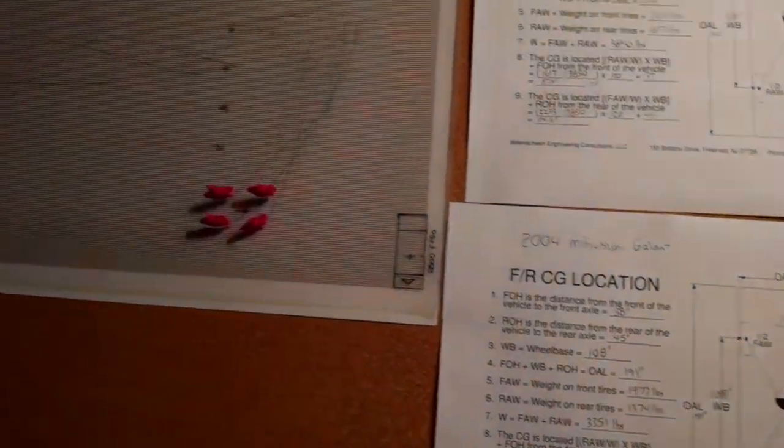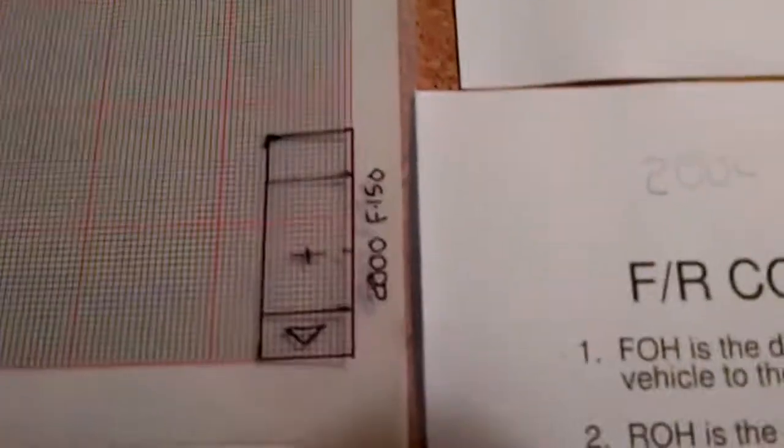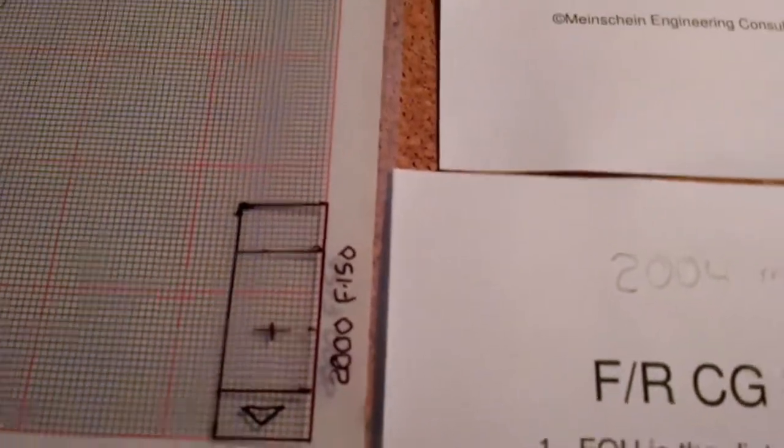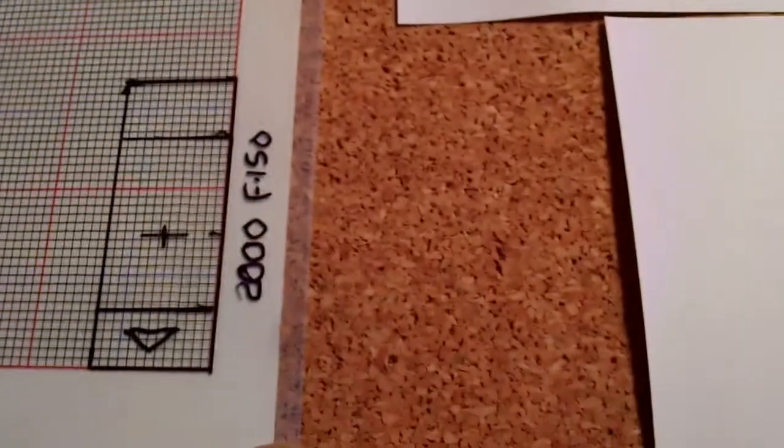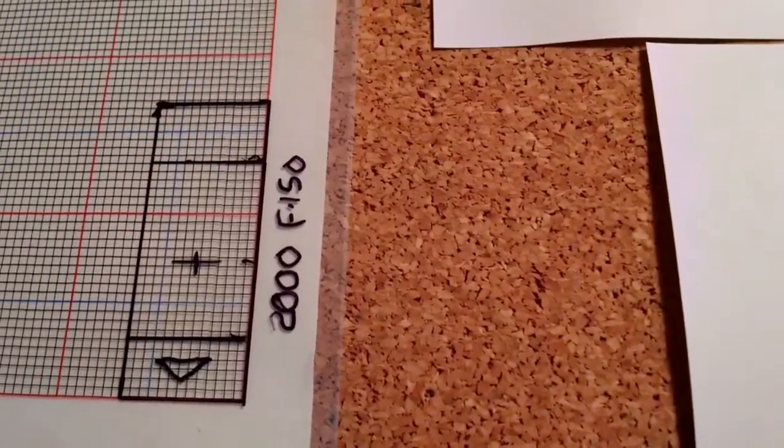Next step is to take that information and plot it to scale on the grid. Now, what I did in this case, this is the 2000 F-150. I used an extra fine Sharpie marker.